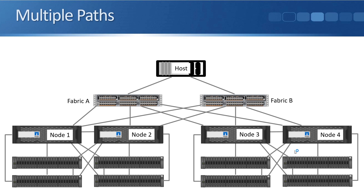Looking at the example topology here, we have a host initiator, which is the client, and a four-node ONTAP system. Following best practice, we don't want any single points of failure, so we've got Fabric A switch and Fabric B switch. Each of the nodes is connected to both switches. There are eight available paths: two to node 1, two to node 2, two to node 3, and two to node 4. For each node, it has two paths — one through each of the fabrics.